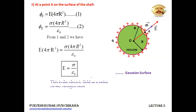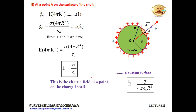This is the expression for electric field at a point on the surface of the charged shell. Alternatively, in place of sigma we can write Q upon 4 pi capital R squared because sigma is surface charge density — charge divided by surface area of the spherical shell, which is 4 pi capital R squared. This is the maximum value of the electric field because of the thin spherically charged shell. If we move away from it, it will decrease.